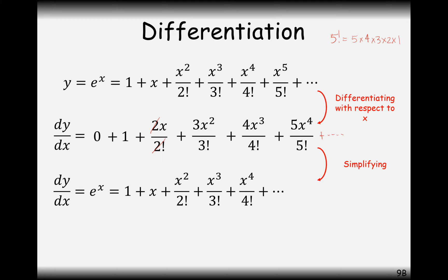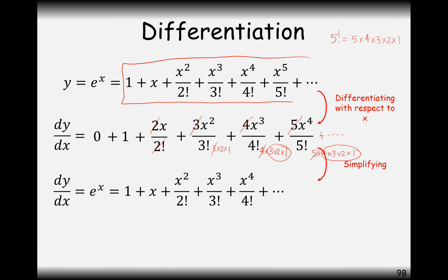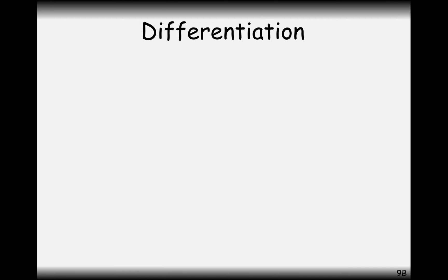Now let's simplify. The 2s here cancel each other out. On this term, 3 factorial is 3 times 2 times 1; cancel out the 3s and we're left with 2 factorial. For the 4x cubed term, 4 factorial is 4 times 3 times 2 times 1 — cancel the 4s and we're left with 3 factorial, giving x cubed over 3 factorial. Similarly, the 5 cancels leaving 4 factorial, giving x to the 4 over 4 factorial, and so on to infinity. What we notice is that the differential is exactly the same function — so e to the x is a really special function that differentiates to itself.